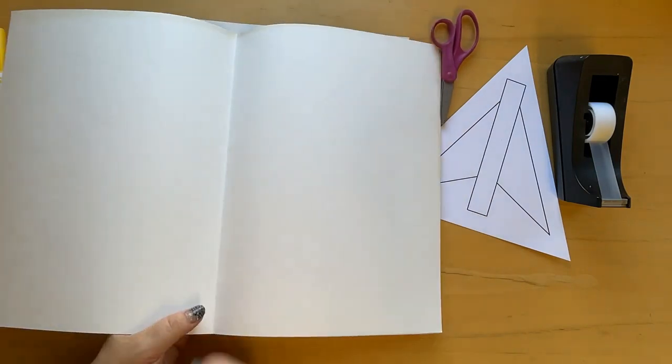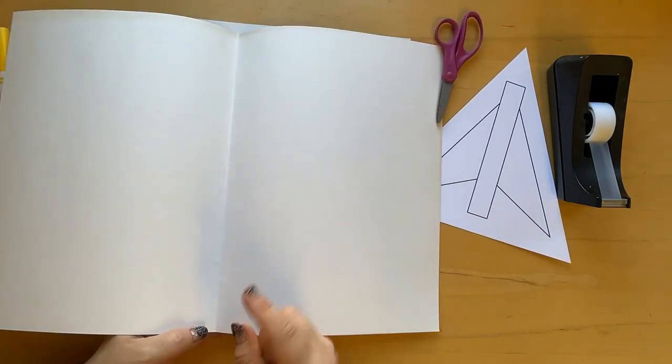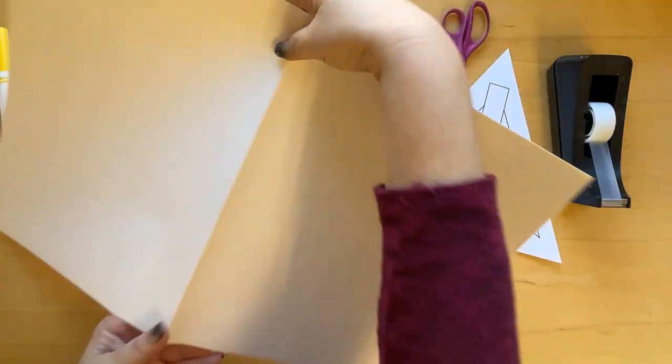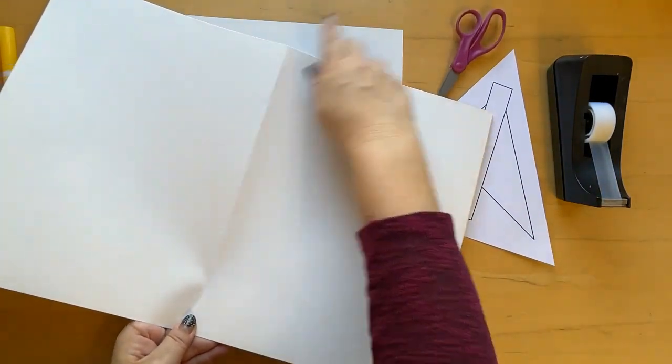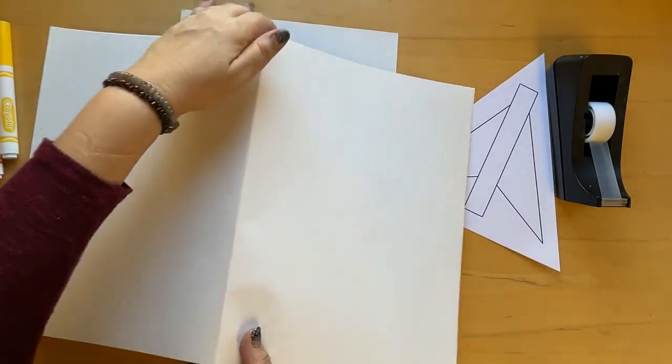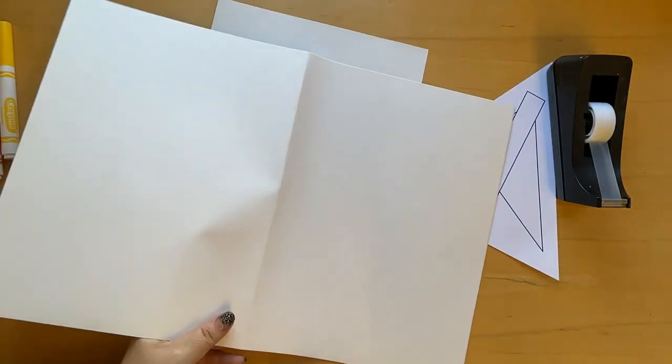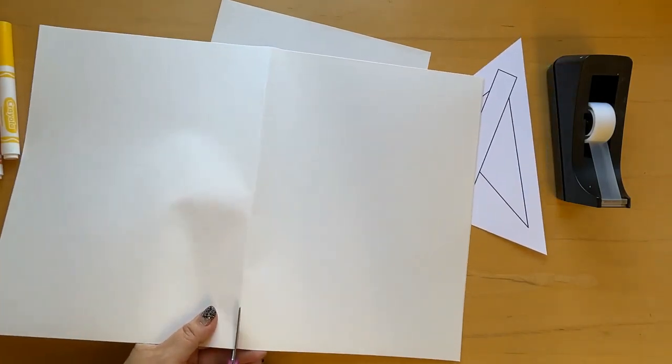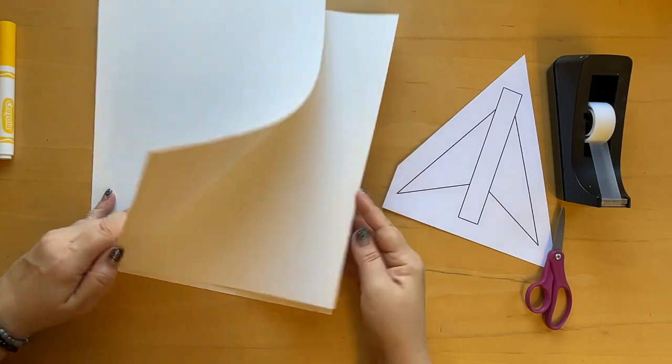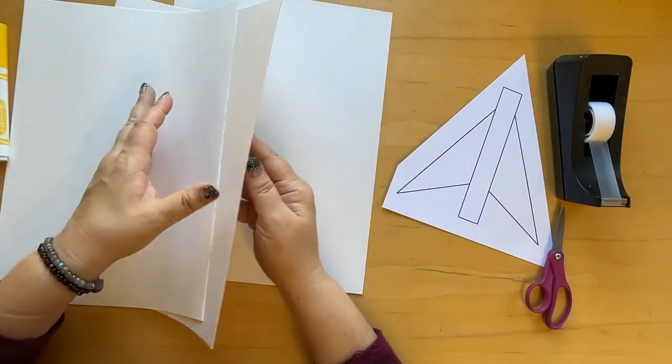The first thing we'll do is open up our pieces of paper. You can cut one at a time or you can cut both together and you're just going to cut on this fold. So use your scissors and cut your paper on the fold. Now you'll have five sheets of regular sized paper.